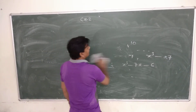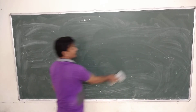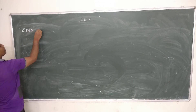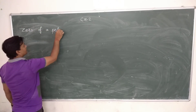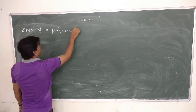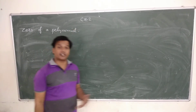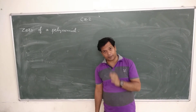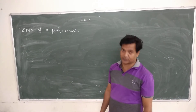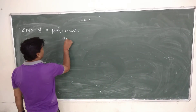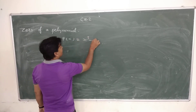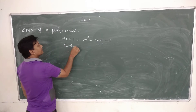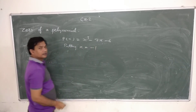Now we are focused on zeros of a polynomial. The definition: that value of variable x is said to be a zero of a polynomial which converts that polynomial into zero. Suppose we have a polynomial p(x) = x cubed minus 7x minus 6, and we are putting x equals to minus 1.